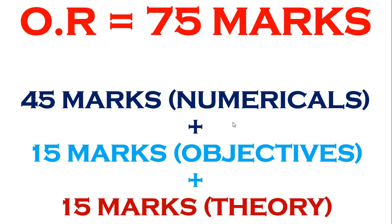The external paper is framed such that 45 marks will be numericals, plus 15 marks will be fixed objective questions, plus 15 marks will be 30 questions. Previously, the Operation Research paper was framed unit-wise — question number one from unit one, question number two from unit two, and so on. But from the current academic year, question number one will be the fixed objective question.